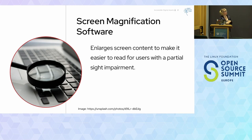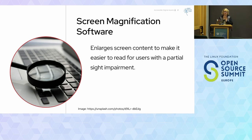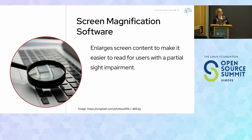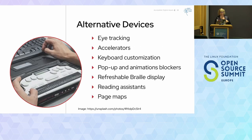Screen magnification software magnifies what's on the screen. Every year it seems like I have to do a Control plus plus or I've lost my glasses. It's used to enlarge screen content and makes it easier for people with partial sight impairment like tunnel vision or blurriness. Sometimes screen magnification software also has text-to-speech functionality.